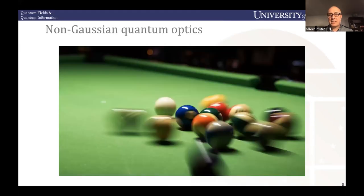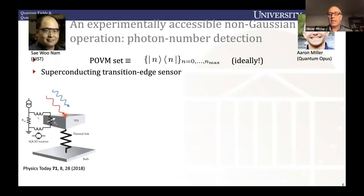So non-gaussian quantum optics is the name of the game here. We care about photons and what better way to look at photons than to detect them and to have an ideal fog state projector. A POVM that's pure in terms of a fog state basis. That would be nice. Well, it's close enough with a superconducting transition edge sensor, which is a very nice device that Seewunam actually perfected from, was used for astronomy, detecting feeble light from the universe. And he turned that into a quantum optics machine. That's fantastic.